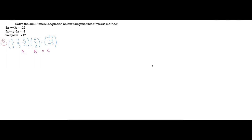In order to find x, y, and z, we have to find the value of B. We have AB equal to C. Then we multiply both sides by the inverse of matrix A. Matrix A multiplied with inverse A gives the identity matrix I. So I times B gives B, which equals A inverse multiplied by C. Therefore, B equal to A inverse C.